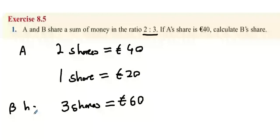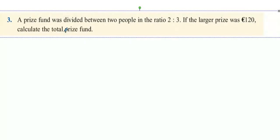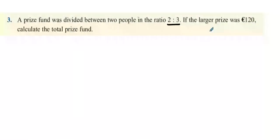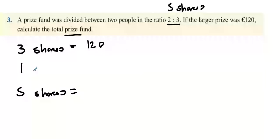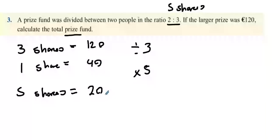Question 2. A prize fund was divided between two people in the ratio 2 to 3. If the larger prize was 120 euro, find the total prize fund. The total prize fund is five shares. The larger prize, which is three shares, is 120 euro. Dividing by three gives one share as 40 euro, then multiplying by five gives five shares: 200 euro.